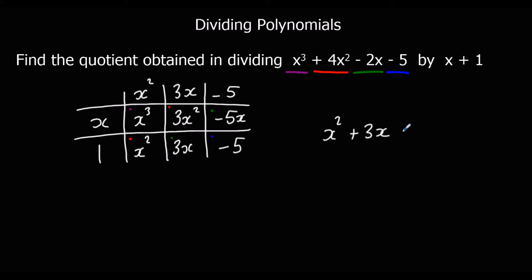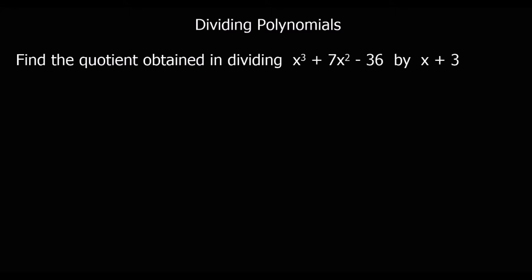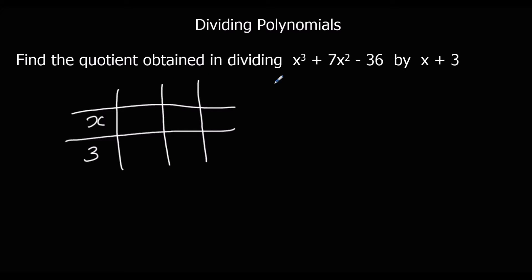We're going to do the same thing again — divide x³+7x²-36 by x+3, by looking at what multiplies by x+3 to give that answer. So I'm going to set up another grid with x and +3 down the side. I know the first term I'm going to get is my x³ term, which is just x³.